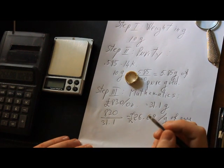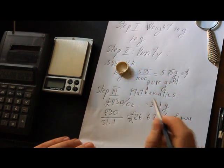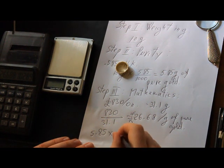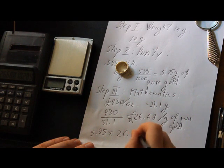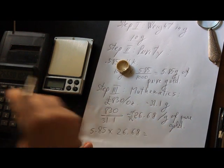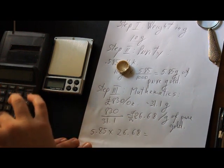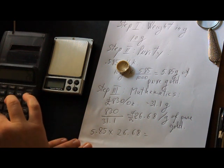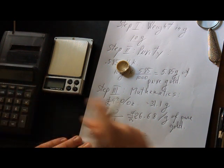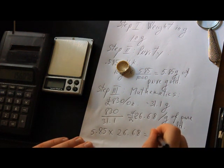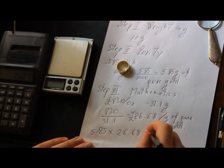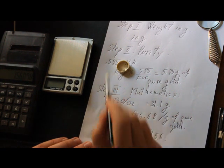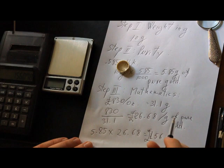All you need to do now is multiply 5.85 by 26.68. 5.85 multiplied by 26.68 equals 156 pounds. That's how much this subject is worth on the spot price.